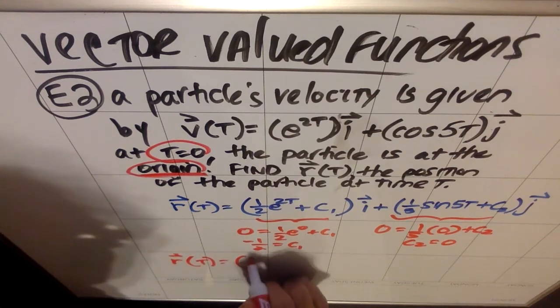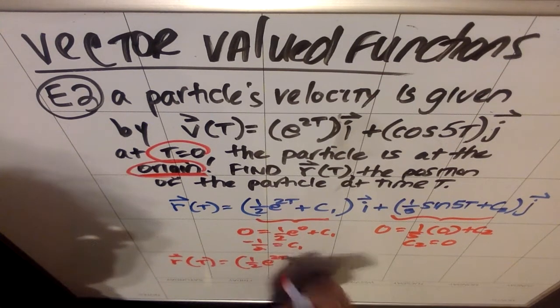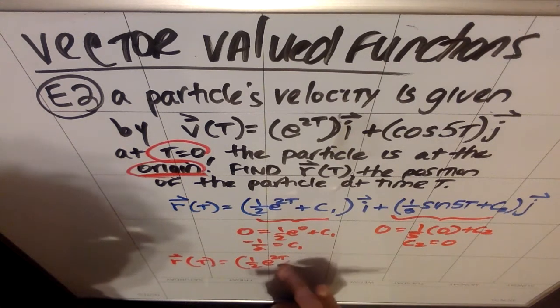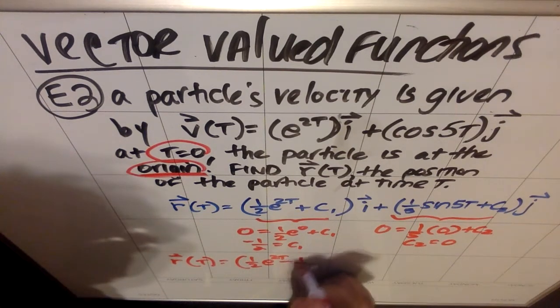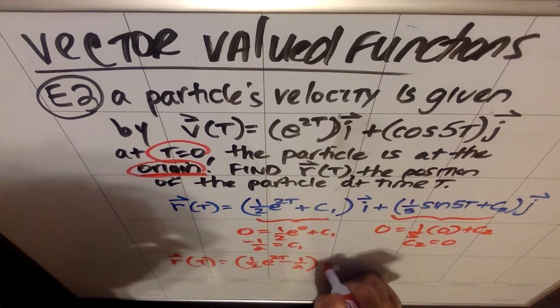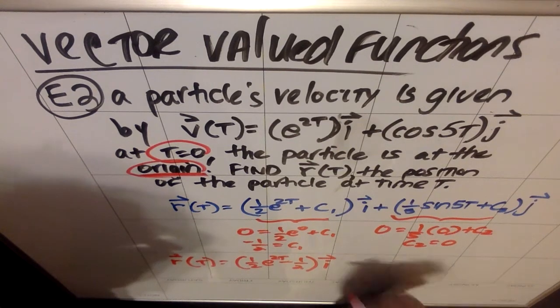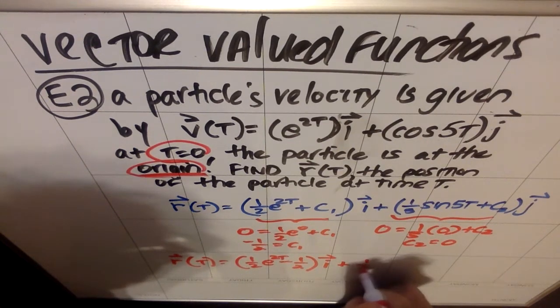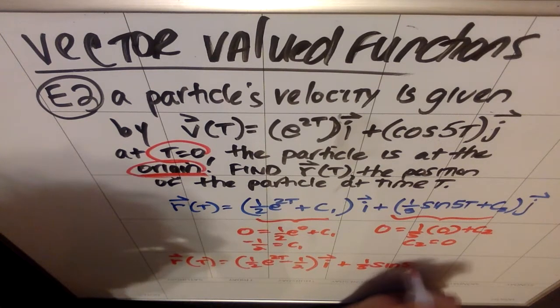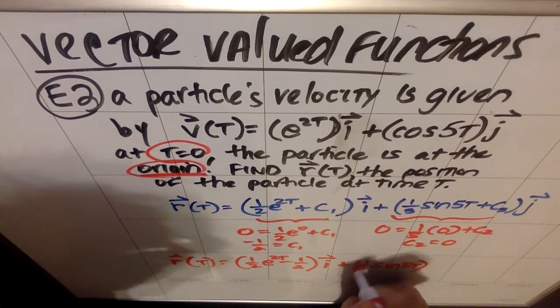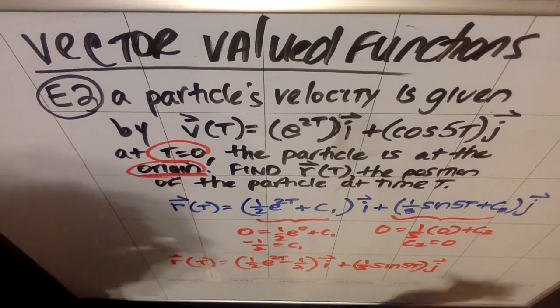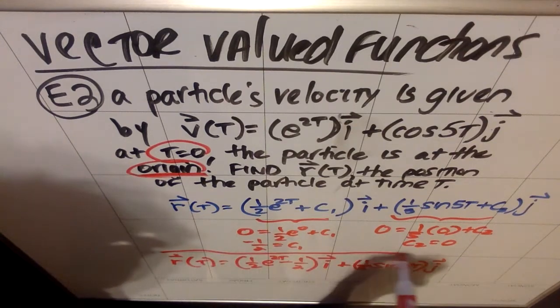So my final answer for my r vector is 1 half e to the 2t minus 1 half, my bad, almost said plus, minus 1 half, and that's all in the i direction. So we put that i vector plus my 1 fifth sine of 5t, that whole function times my j direction. So there's my position.